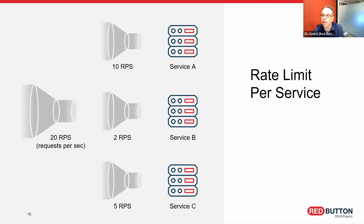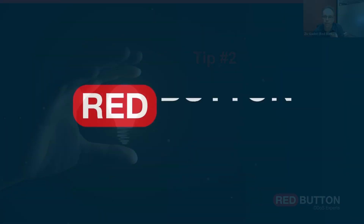Let's say service B is the login page. You can say: I don't think a legitimate user should do more than two login attempts in a second. If it is doing more than that, I can rate limit it, or I can even set it to block once this threshold is crossed.